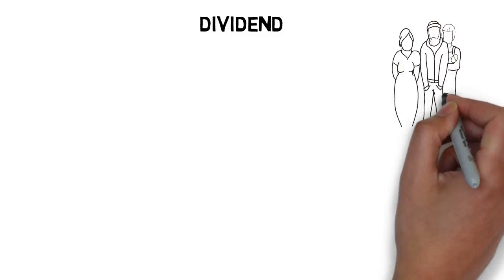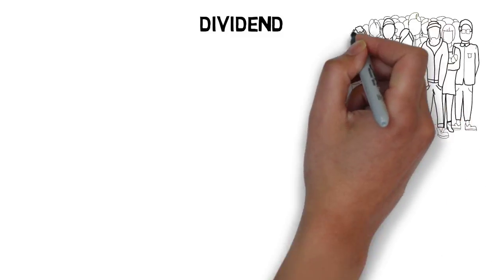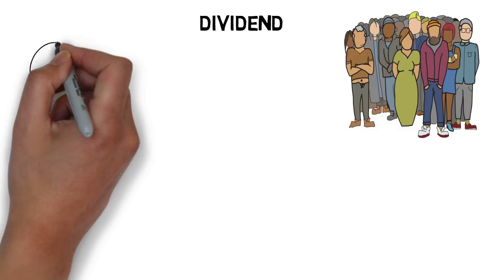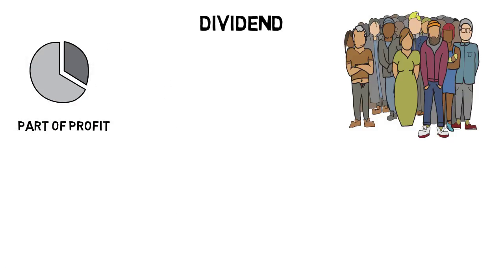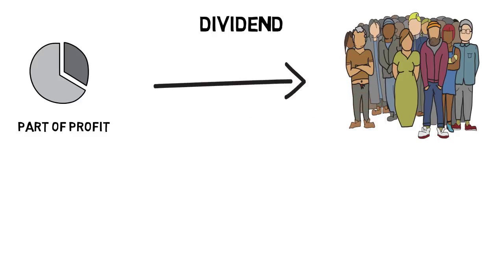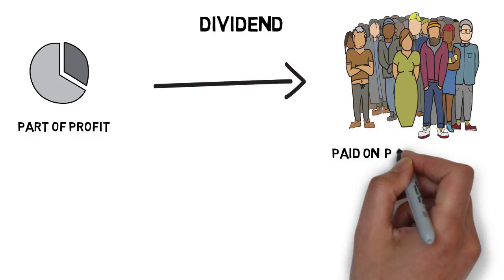Dividend are profits paid by the company to its shareholders on a per share basis. It is not compulsory that a company should pay dividend. The company can use that fund for new projects and the betterment of the future. But when the growth opportunity of the company has been exhausted and the company holds excess cash, the company goes for dividend.